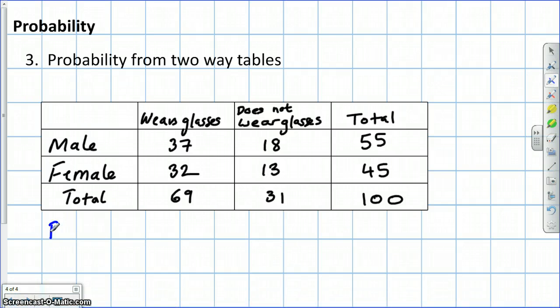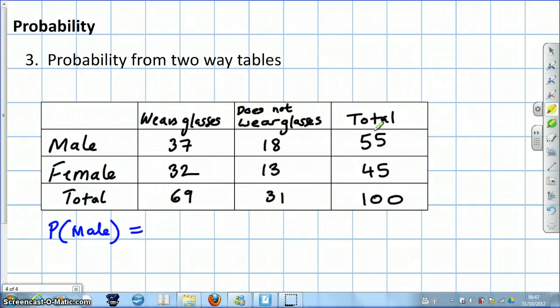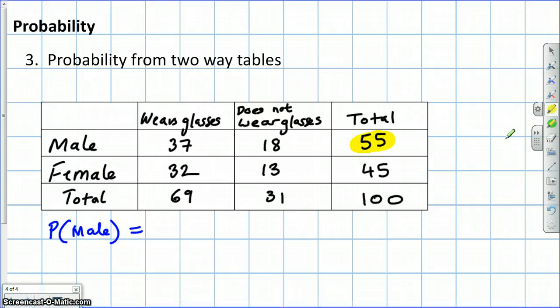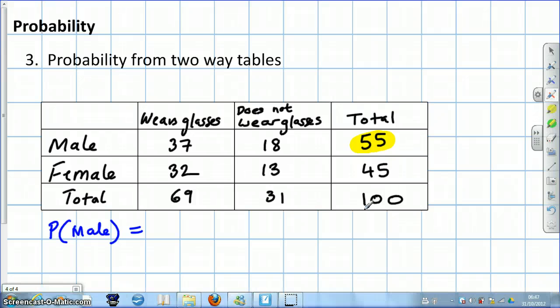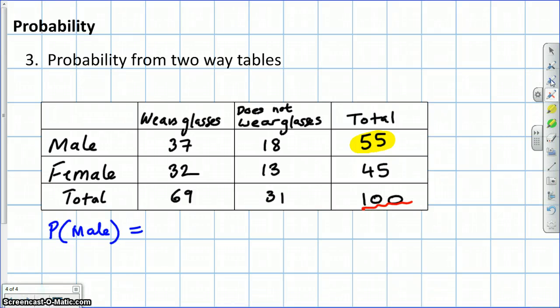Here you go. What's the probability of one of the people being selected at random being male? Well, there were 55 males out of a total of 100. So as you can see, it's very similar to the way we work with empirical probability.